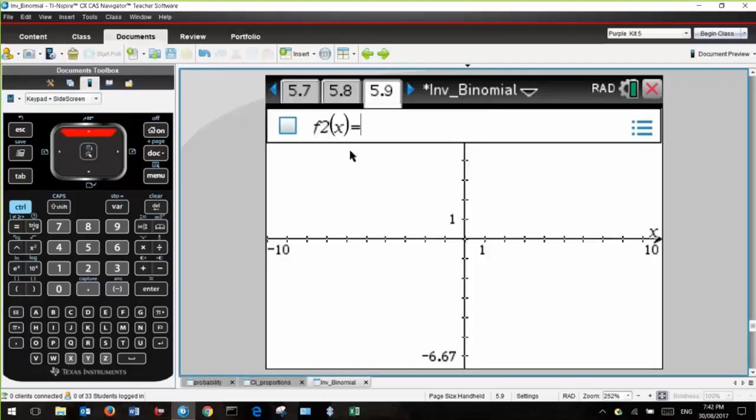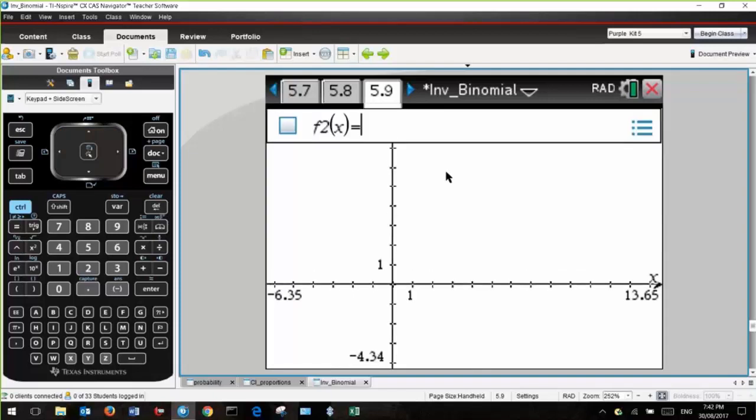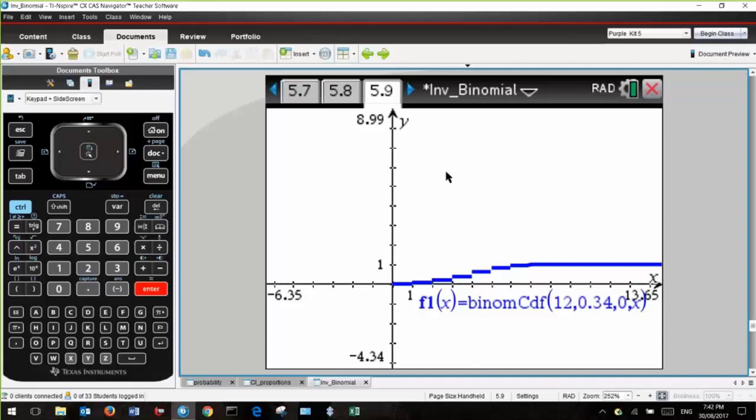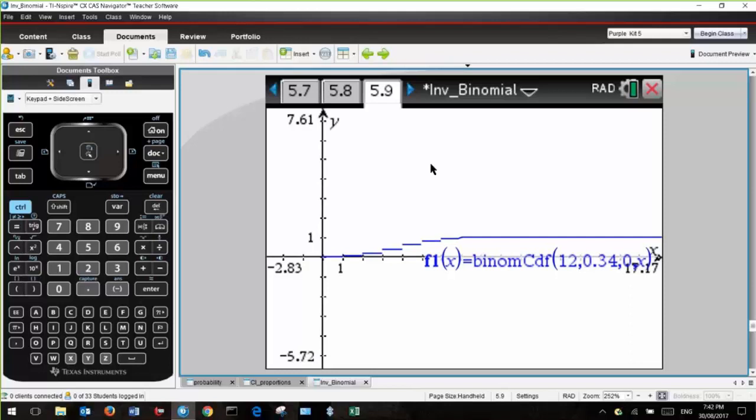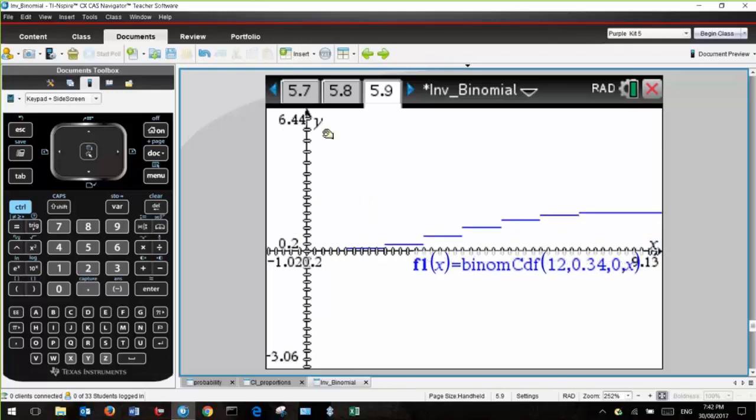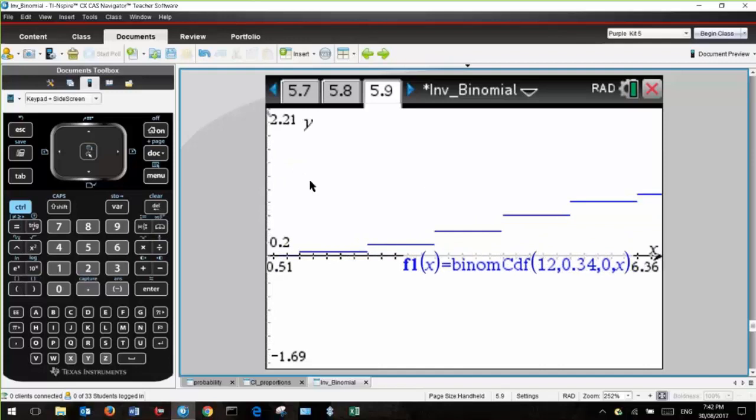Let's add a graphs page. For F1 of X, we want binomial CDF. The syntax is N, P, lower bound, upper bound. We don't know what the upper bound is, so we'll just call it X, and it will give us all the values of X. Let's graph that, and we get this graph which is rather interesting. I could change the scale, and that's probably not a good scale.